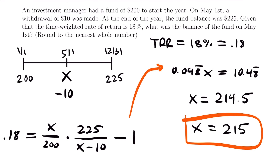That is the solution to this problem — the balance of the fund on May 1st was $215. This makes sense because our other balances were close to that value: an initial balance of $200 and a final balance of $225, so a May 1st balance of $215 is completely reasonable. That was the last example for this video. If you have any questions, feel free to leave them in the comments. I'll see you next time.